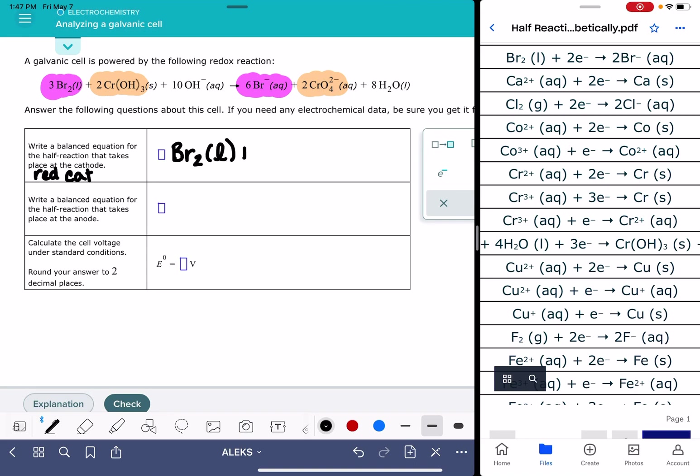Br2 liquid plus two electrons makes two Br minus aqueous, and it's totally okay that I'm using different stoichiometric coefficients here than what I used up here. That's completely fine. Alex doesn't need you to match these coefficients up with each other. This equation just needs to be independently balanced.